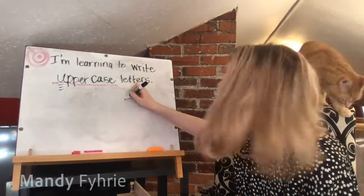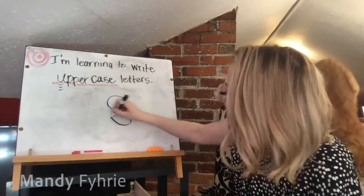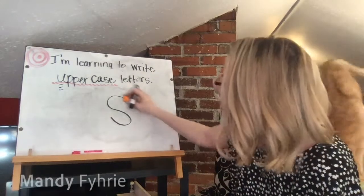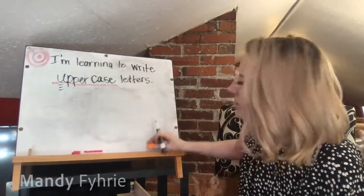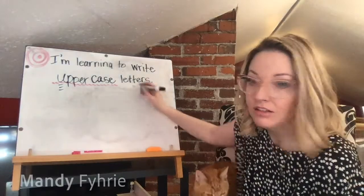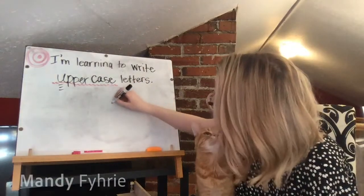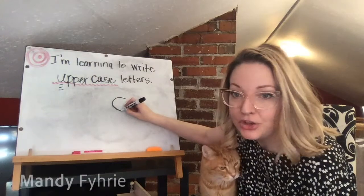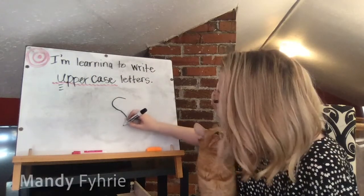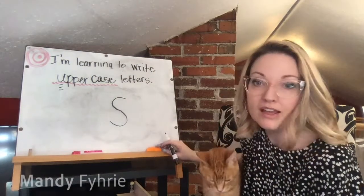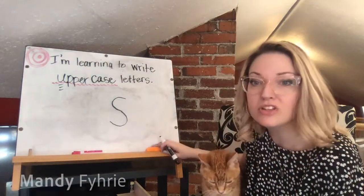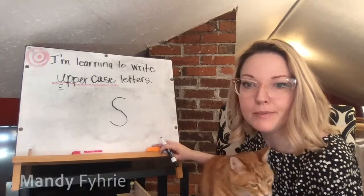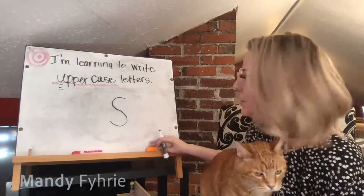Capital S looks just like a lowercase s. Slither around and back like a snake — it looks like a little C, then you slither and curve back the other way. It's one of those letters that takes practice, but once you get the hang of it, easy peasy lemon breezy.